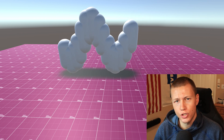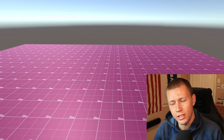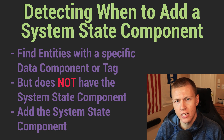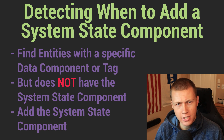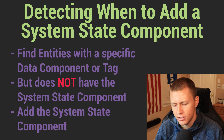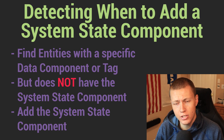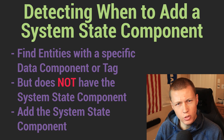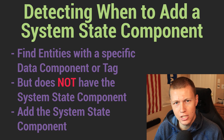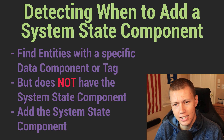Now let's talk about how to actually use these. There are three phases to think about. The first phase is detecting when a system state component needs to be added to an entity. Normally a specific tag or component marks the entity as needing a system state component. We have a system that filters for everything with that specific tag component — a regular data component — that does not already have the system state component. Then we add the system state component, and once the entity has both the tag and the system state component, that system won't run again on it.